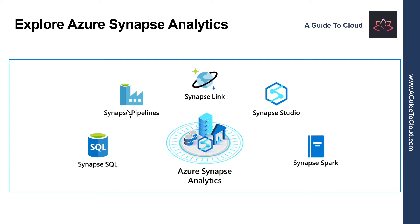Then we have Synapse Pipelines. A Synapse Pipeline is a logical grouping of activities that together perform a task. The activities in a pipeline define actions to perform on your data — for example, you might use a copy activity to transform data from a source dataset to a destination dataset. Then we have Synapse Link, which allows you to connect to Cosmos DB and perform near real-time analytics over operational data stored in a Cosmos DB database. Finally, we have Synapse Studio, a web user interface that enables data engineers to access all the Synapse Analytics tools. You can use Synapse Studio to create SQL and Spark pools, define and run pipelines, and configure links to external data sources.